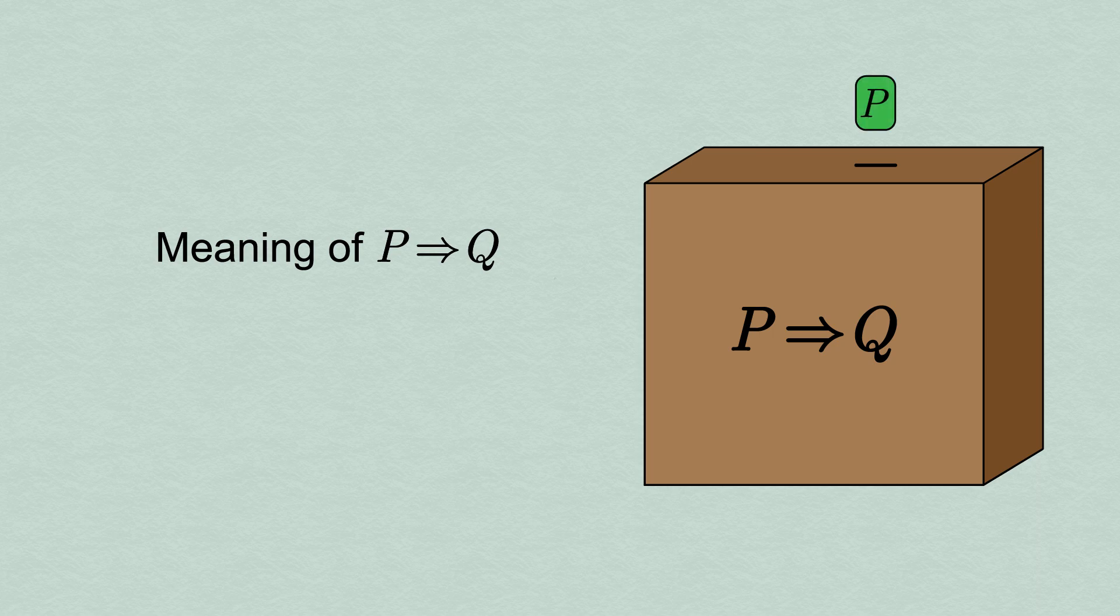There are quite a few ways to prove implications, but we'll just discuss the direct proof of P implies Q.